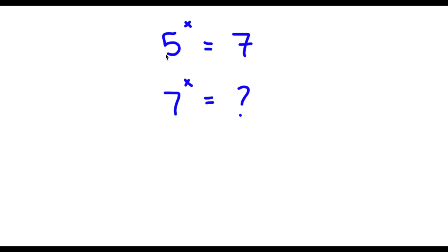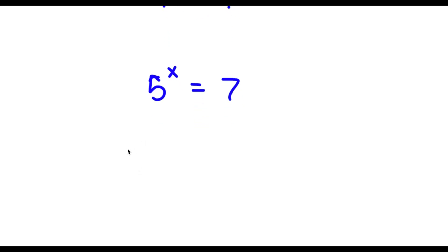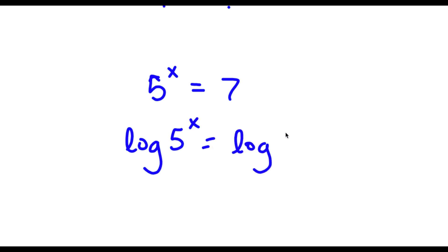We are given that 5 to the power of x equals 7, and we want to find the value of 7 to the power of x. The first thing to do is find the value of x. So we have 5 to the power of x is equal to 7. To find the value of x, I'm first going to take the log on both sides, so now I have log of 5 to the power of x is equal to log 7.